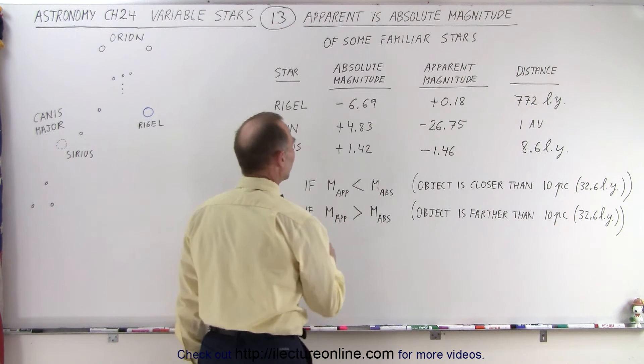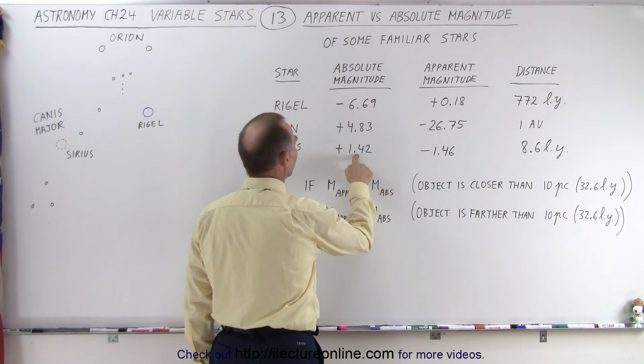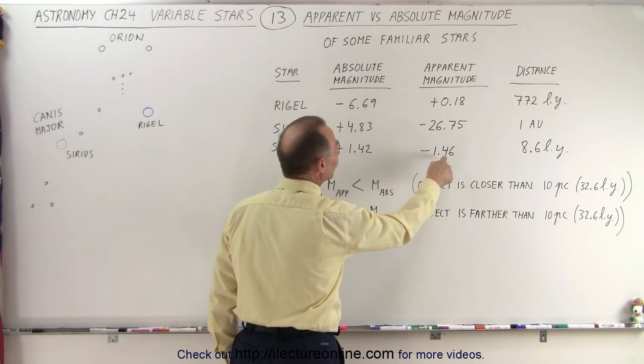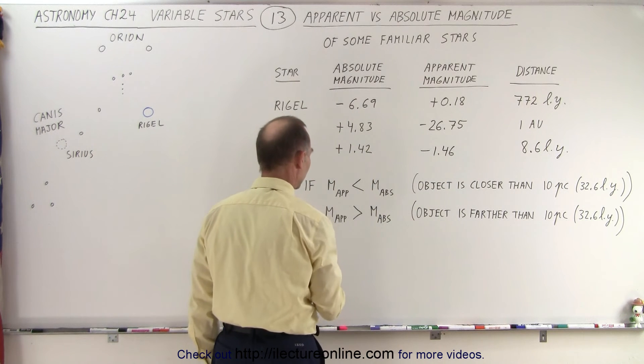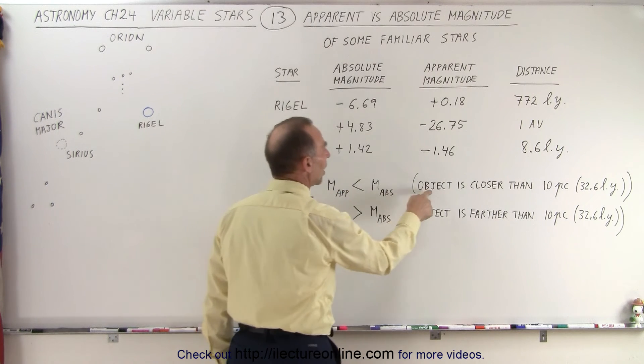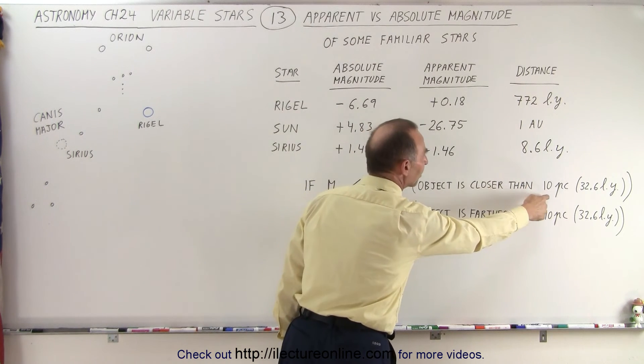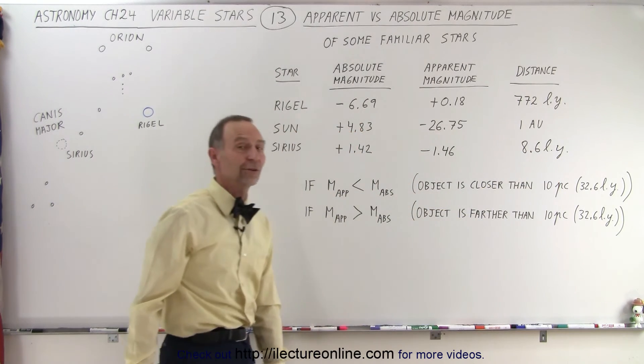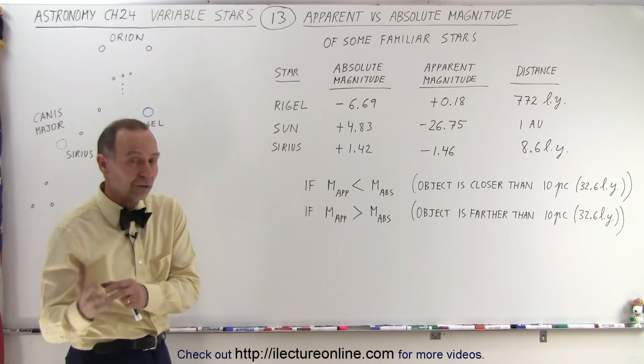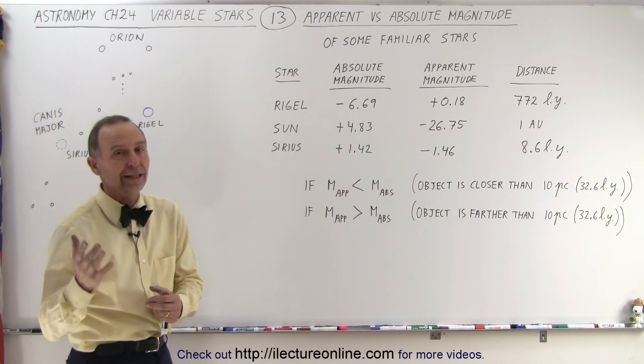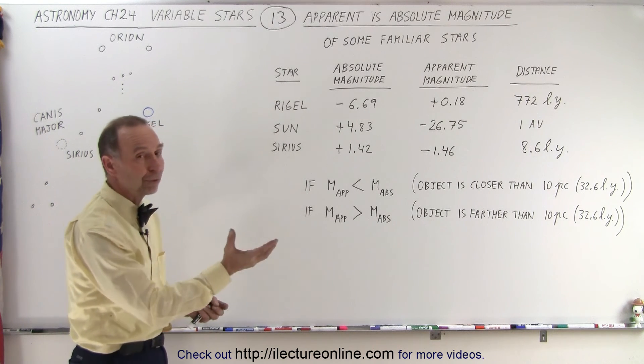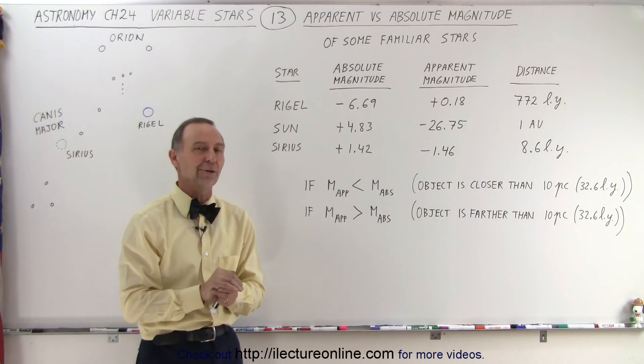How about Sirius? Here we can see that this is a bigger number than that, or the apparent magnitude is smaller than the absolute magnitude. So the apparent magnitude is smaller than the absolute magnitude. Therefore, the object is closer than 10 parsecs. Sure enough, 8.6 is closer than 32.6. So that's how we can see whether or not the star is closer or farther away than 32.6 light years, which is 10 parsecs, based upon comparing the absolute versus the apparent magnitude.